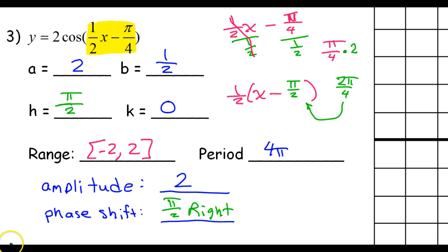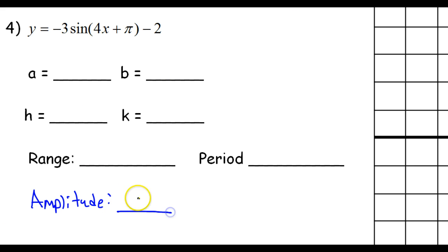Let's do one more example. Number 4, the A value is negative 3. So, please understand that that means that the amplitude is 3. The amplitude is always positive. The B value is this 4, which doesn't mean a lot to me by itself, but we'll come back to that later.